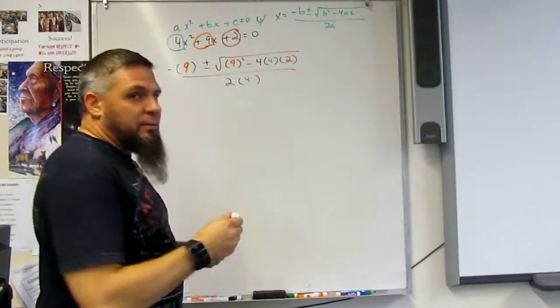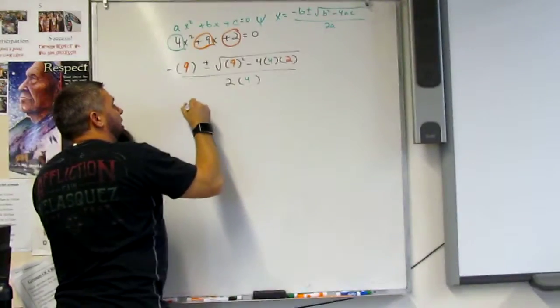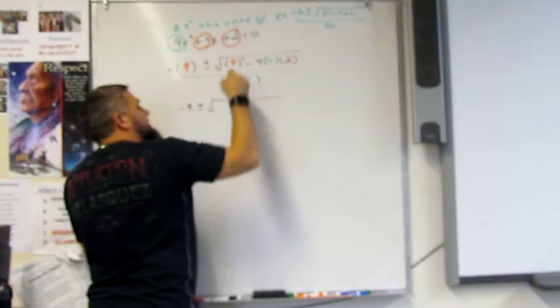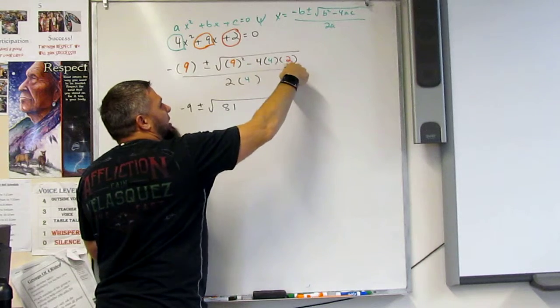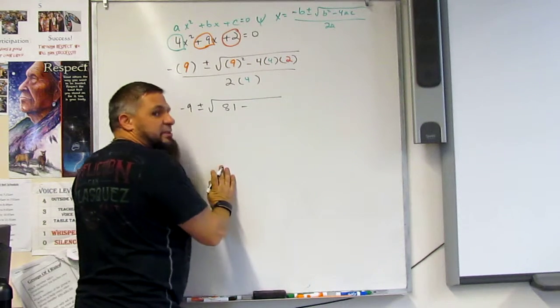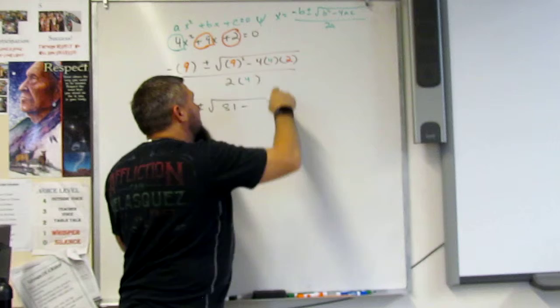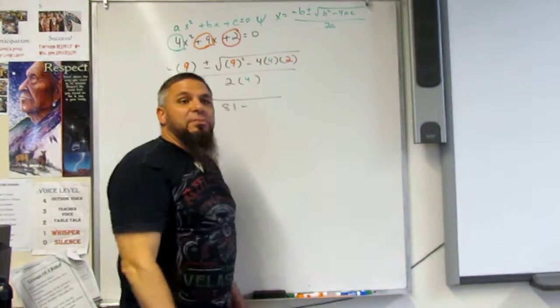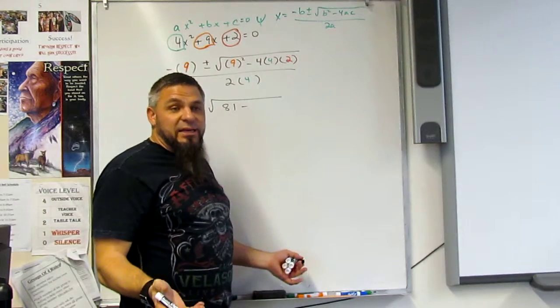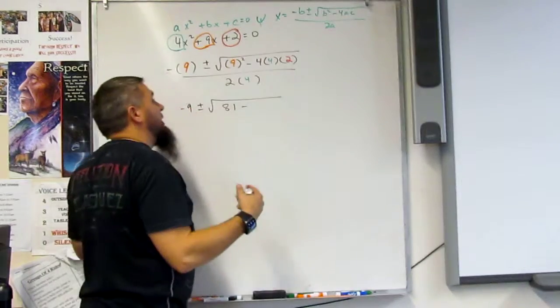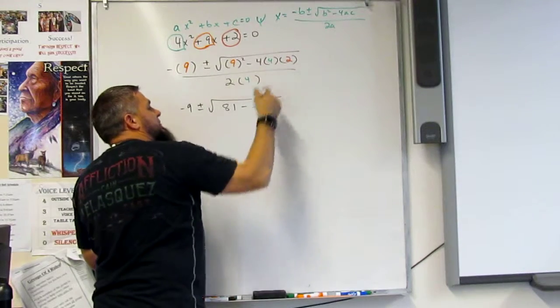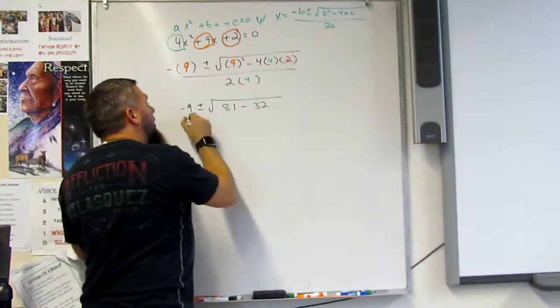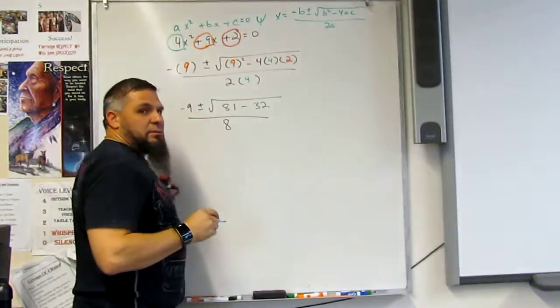Then I just do the math. Negative 9 plus or minus the square root of 9 squared, so 81, minus times all pluses gives me a minus, right? So if there was 2 pluses or 2 minuses in here, that would be a plus. If there's all 3 minuses, then that would be a minus. So keep that in mind. All right, 4 times 4 is 16, times 2 is 32, right? All over 8.